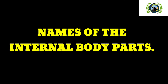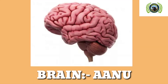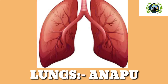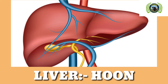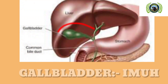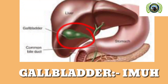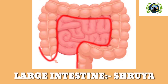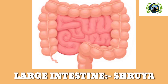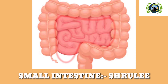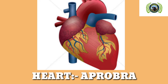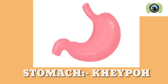Names of the internal body parts. Brain — Anu. Throat — Eralo. Lungs — Anapu. Liver. Gallbladder. Intestine. Large Intestine — Shruya. Small Intestine — Shruly. Heart — Aprobra. Stomach — Khaipo.